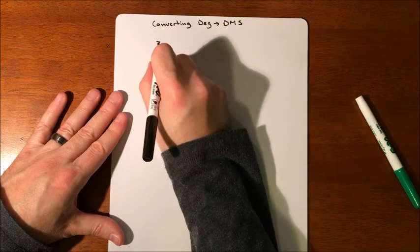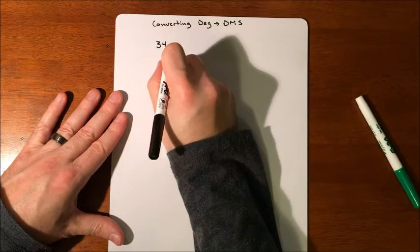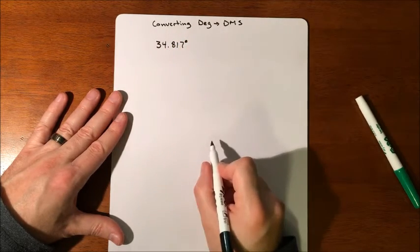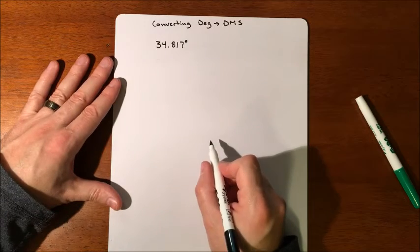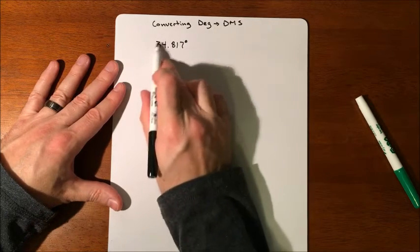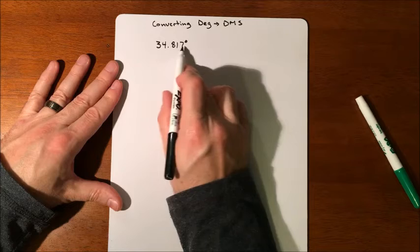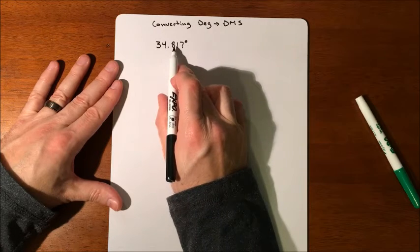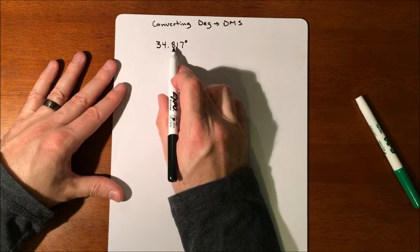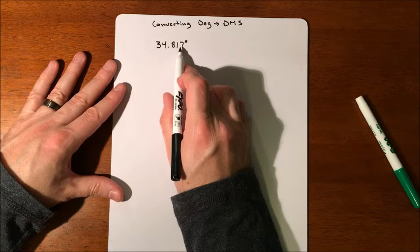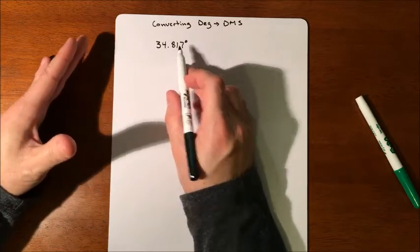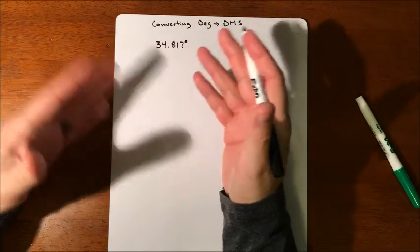So if you have 34.817 degrees, we want to make this into degrees, minutes, and seconds. So the degree part, this we're going to try to convert into minutes and seconds. So you can think of this as kind of a percentage. It's 81.7% of an hour. So how many minutes would that be? And then how many seconds would that be?